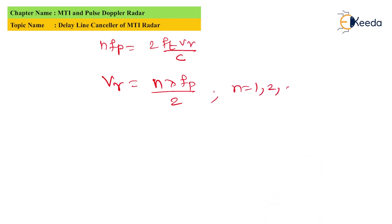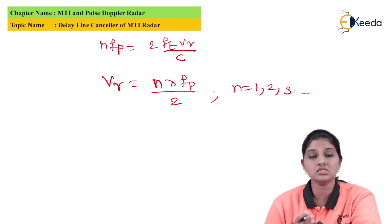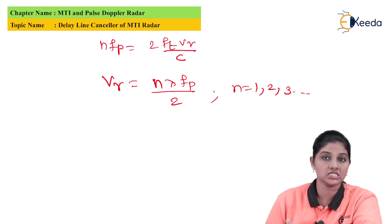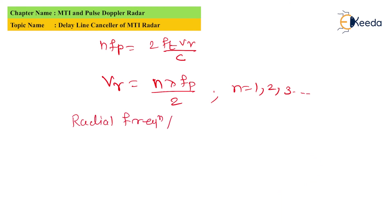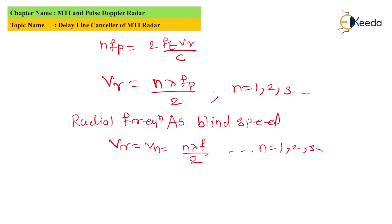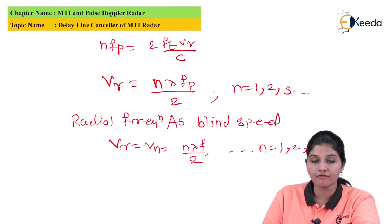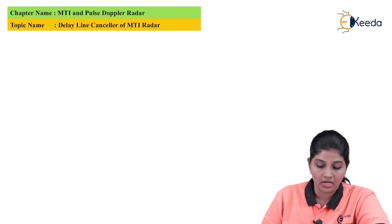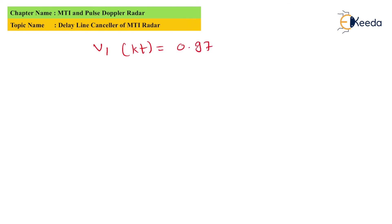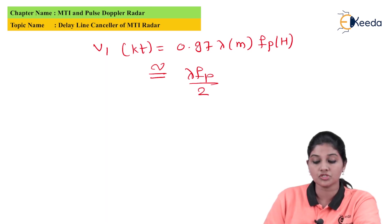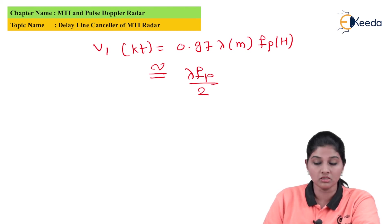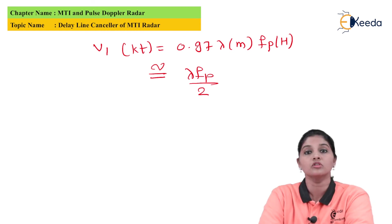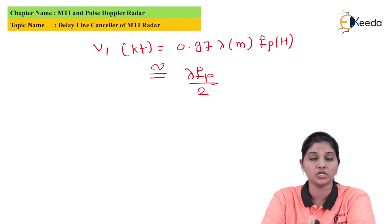If we consider this radial velocity as a blind speed, then vr = vn = n·λ·fp/2, for n = 1, 2, 3, 4, and so on. If λ is measurable, the equation in knots is given by: v1(kt) = 0.97 × λ(in meters) × frequency(in Hz), which is approximately equal to λ·fp/2.